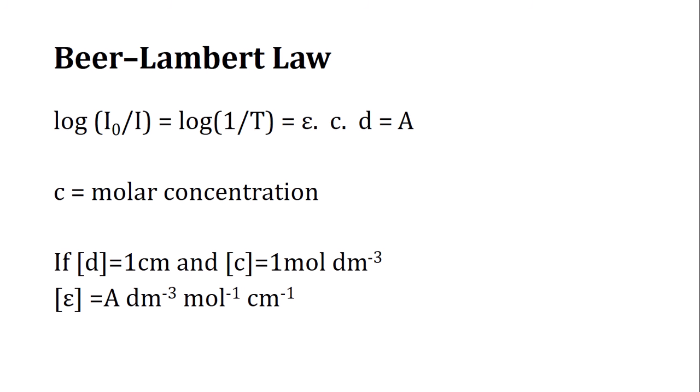In the second situation, where 90 percent of light was absorbed and only 10 percent was transmitted, log(1/T) = log(1/0.1) = log(10) = 1. In that case, we can say the absorbance is 1.